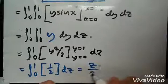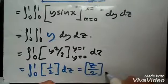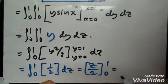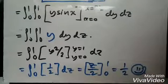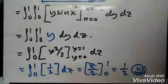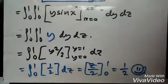Integrating one half gives us z over two, evaluated from zero to one. The final answer is one half. Thanks guys, hope this helped — let me know if you need any more help with triple or double integrals. Take care!